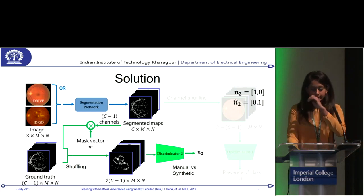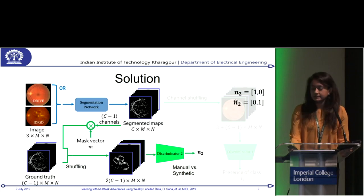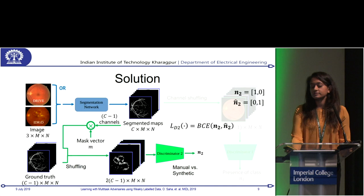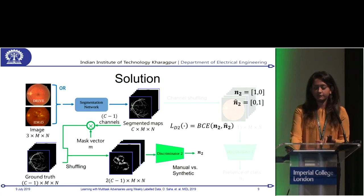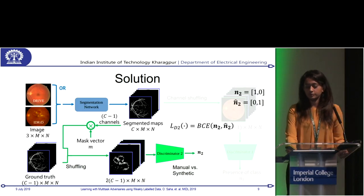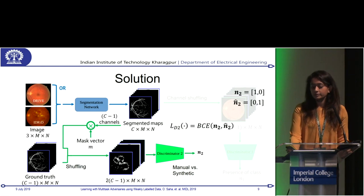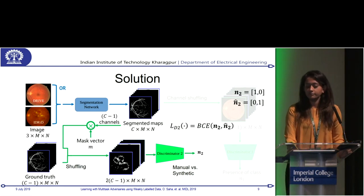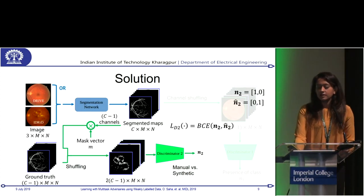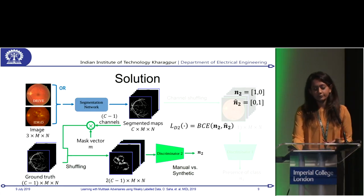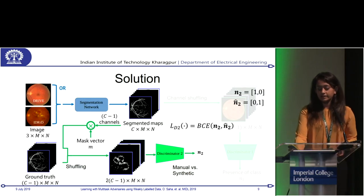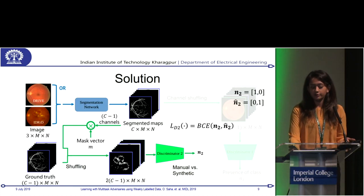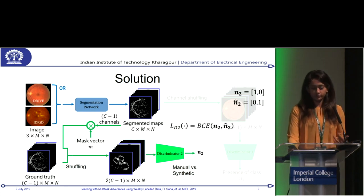Discriminator 2 is the traditional manual versus synthetic discriminator, giving a two-length one-hot vector output — one for manual and zero for synthetic. We also remove the background class after getting segmented maps, because the background differs between datasets: in DRIVE, the optic disc is counted as background since it's not annotated, while in IDRID, vessels go into background pixels. So we remove the background and compute the BCE loss after this removal.